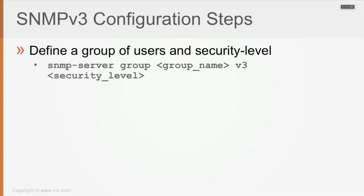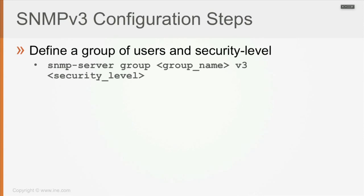From the configuration steps point of view, you're going to first define a group of users and the security level. That's going to be done via the SNMP server group command, then the group name, you specify version 3 and then a security level — one of the three options we were speaking about before.